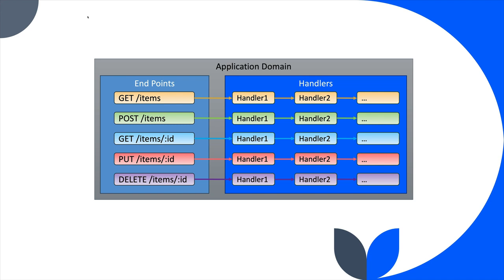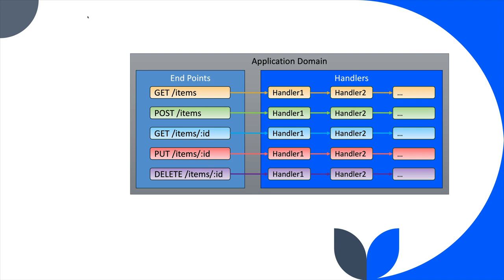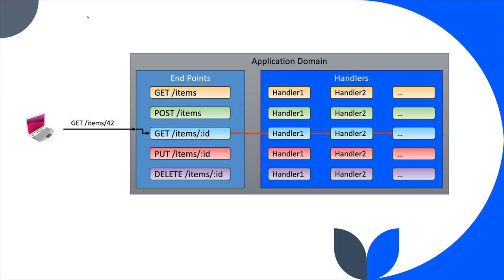Now I want to focus on the idea of a request coming into our application. Consider the route defined by the endpoint slash items slash id. If a client sends a GET request to slash item slash 42, it's going to match the endpoint GET slash items slash id. It will then traverse through our handlers, which do whatever we have defined for that endpoint. Hopefully the picture so far makes sense — we have an endpoint and we can have multiple handlers.